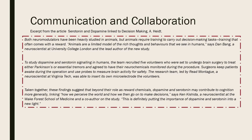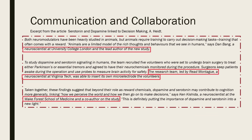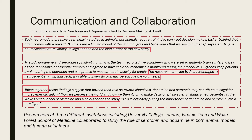Here is an example of collaboration. In this excerpt, three different teams are conducting related research in either animal models or human volunteers. These teams of scientists have collaborated to combine their findings to draw conclusions about the role of serotonin and dopamine in cognition. Taken together, these findings suggest they have then communicated their findings by co-authoring a publication. We could summarise this by saying researchers at three different institutions, including University College London, Virginia Tech and Wake Forest School of Medicine, collaborated to study the role of serotonin and dopamine in both animal models and human volunteers.